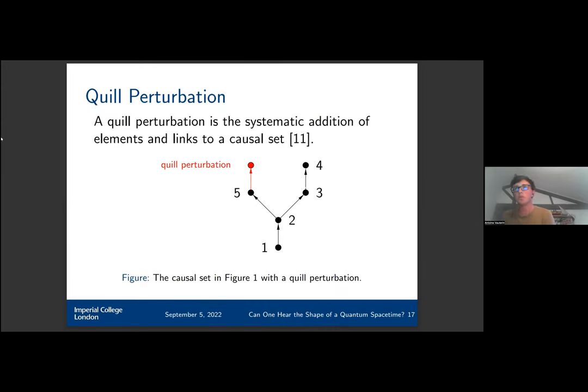A second approach we took was using so-called quill perturbations. Instead of just looking at the spectrum of a causal set, we are interested in how the spectrum changes as the causal set changes. For instance, if we have two causal sets that are symmetric, the spectrum will end up being the same. So instead we can look at the change of the spectrum as we add elements to the causal sets, and this will allow us to distinguish them. Here we've taken the causal set from previously and we've just added one quill perturbation, so we've added an element to the fifth event.